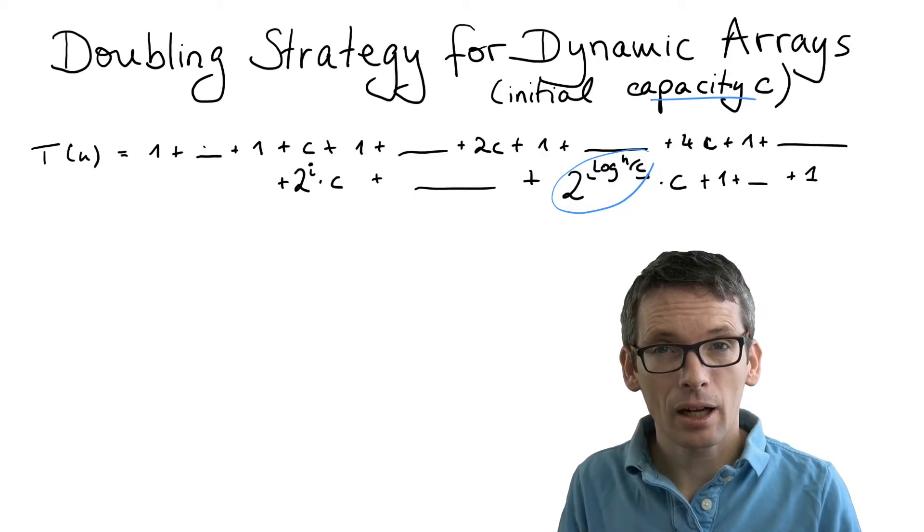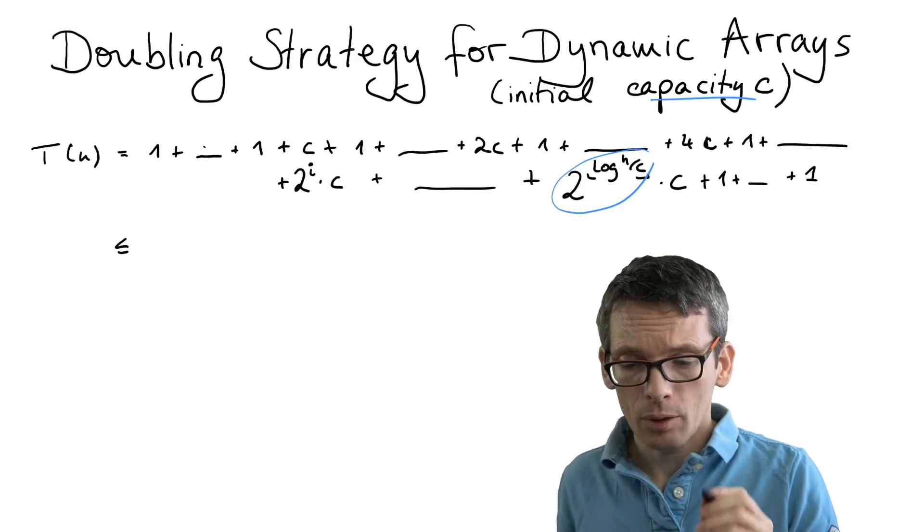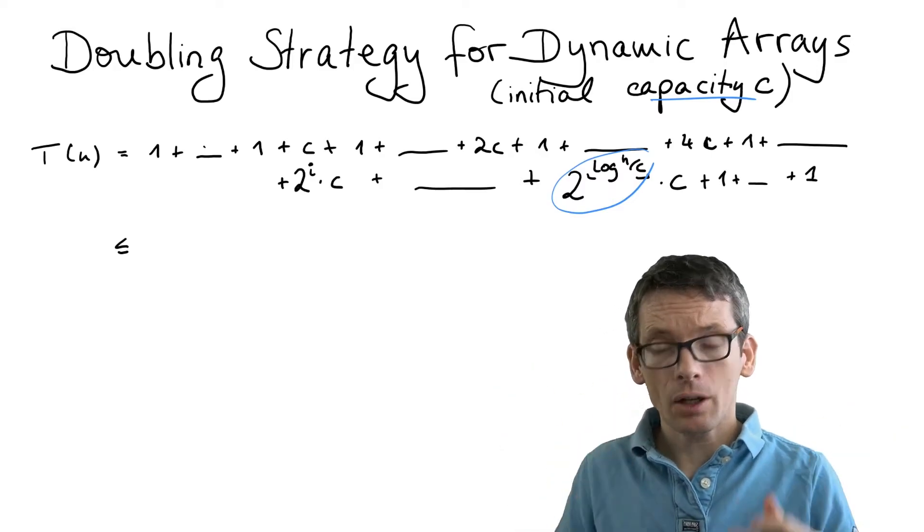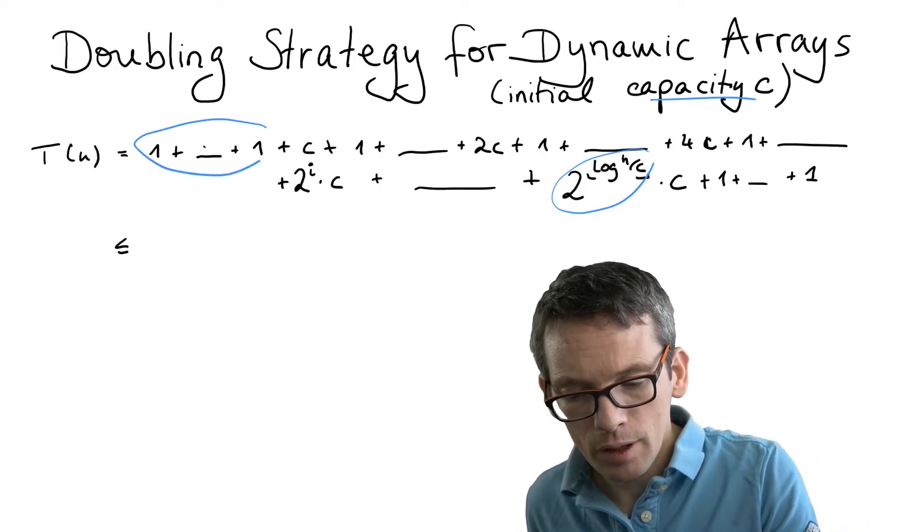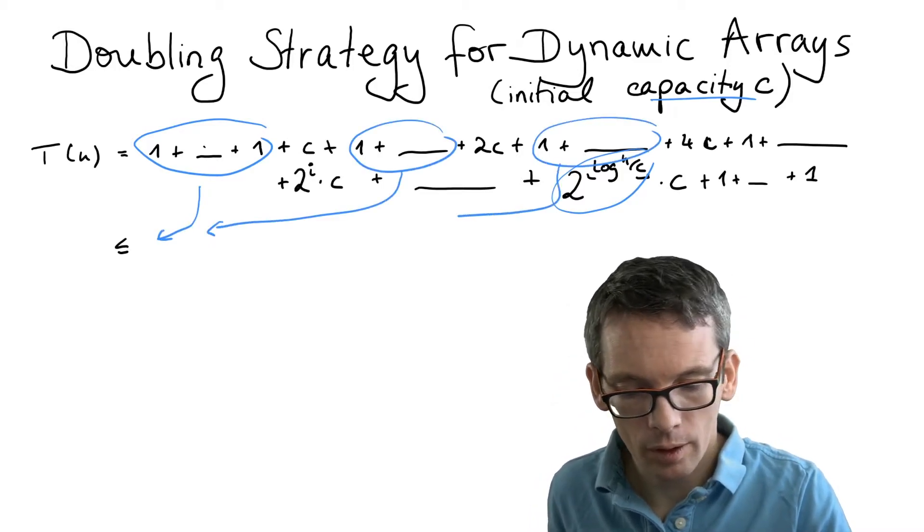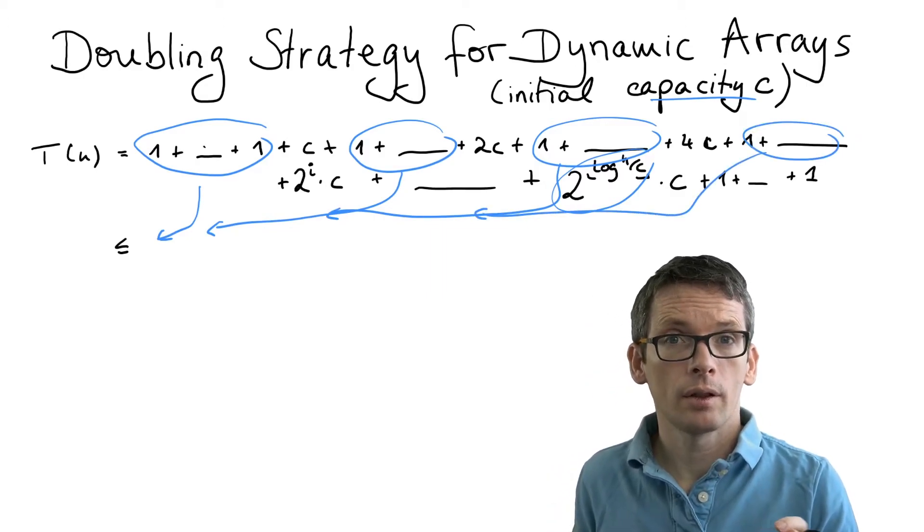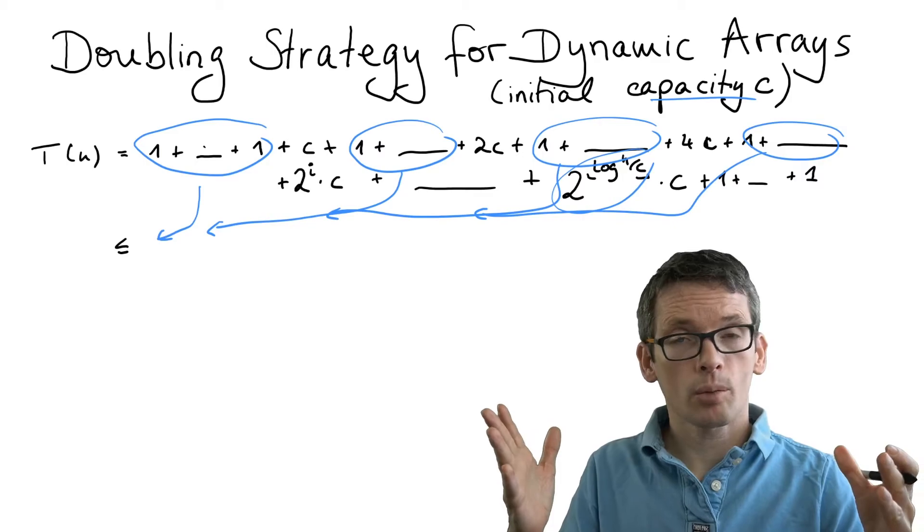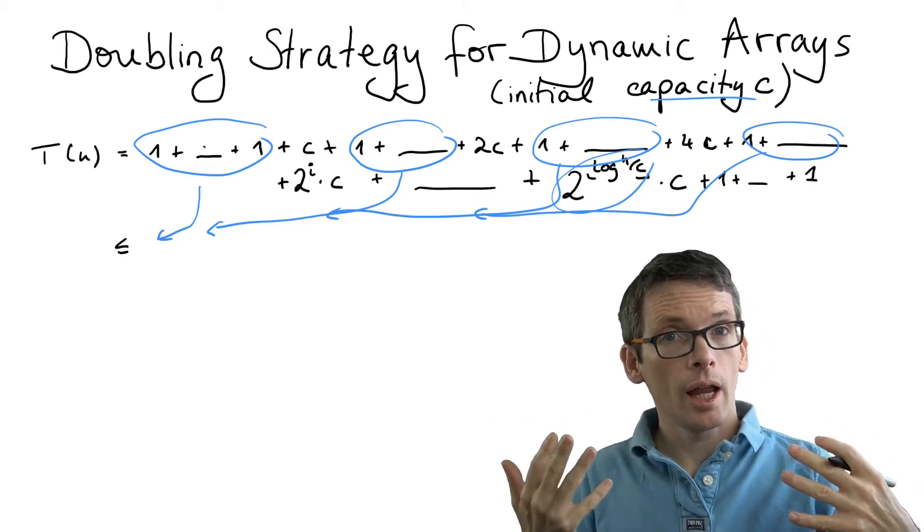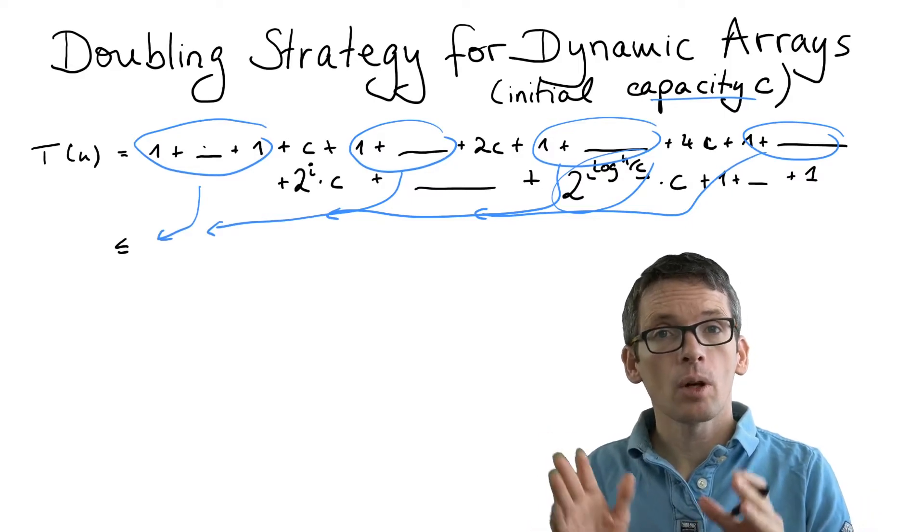So let's add up these terms. First of all we have lots of ones and we can group those. We can simply add all of those together. We have these ones here, we have these ones here, we have these ones here, and so on. How many such ones do I have? I have at most n push operations, so I have at most n such ones. So if I add all of these up I get a term smaller equal n.